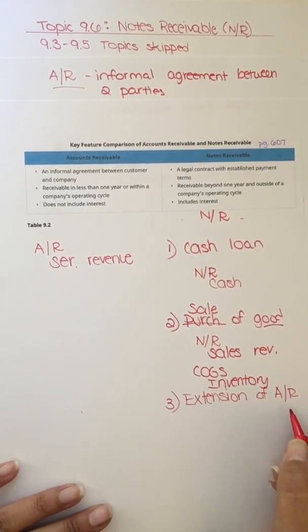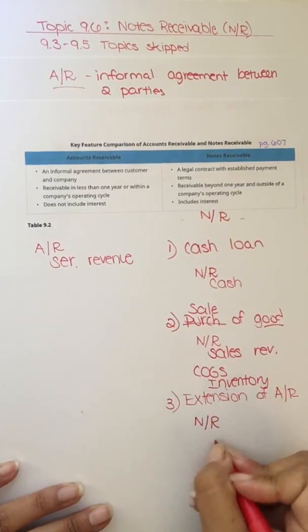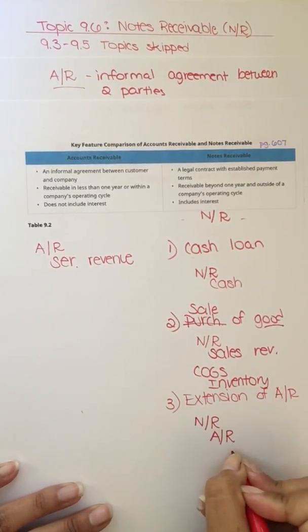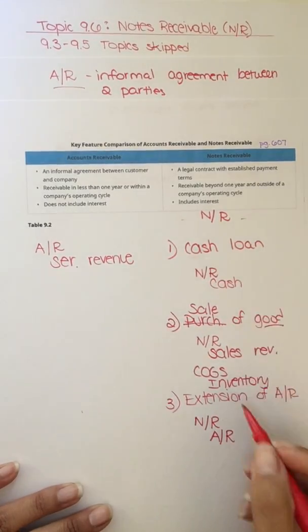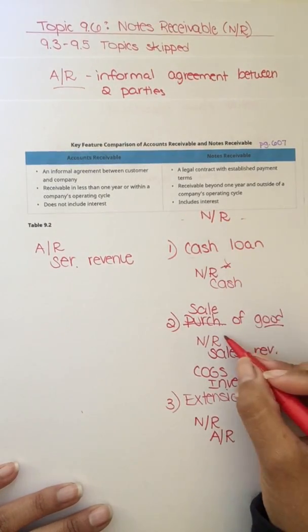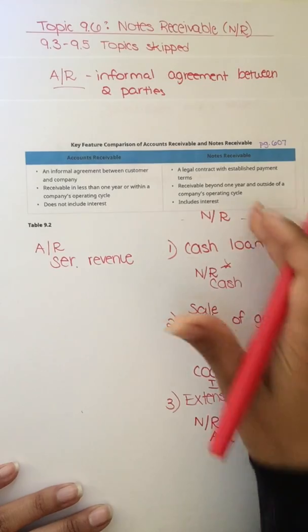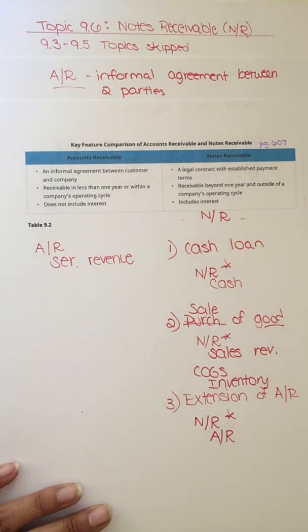The next one, we extend a customer's existing account receivable. So we're accepting a note in place of their account. So just decrease one asset and move it to another. So you'll notice that all three situations result in a debit to the note because we're creating that note receivable. It can just happen because of different reasons.